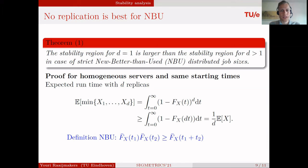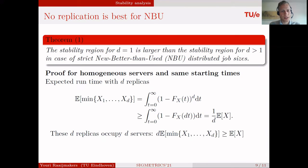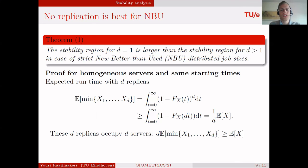With a substitution of variables, this integral equals 1/d times the expectation of the job size. But since d replicas occupy d servers, to calculate the total server capacity used we multiply by d, giving us a quantity greater than or equal to the expectation of X. This right-hand side is exactly the server capacity for d equals 1, so we have proved that the stability region for d equal to 1 is larger than for d greater than 1, under homogeneous servers and same starting times.